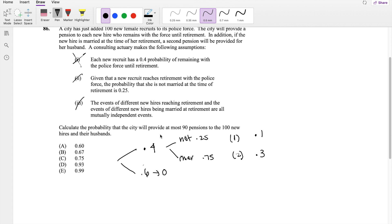They ask to calculate the probability that the city will provide at most 90 pensions to the 100 new hires and their husbands. Since 100 is definitely bigger than 20, we can use the central limit theorem.